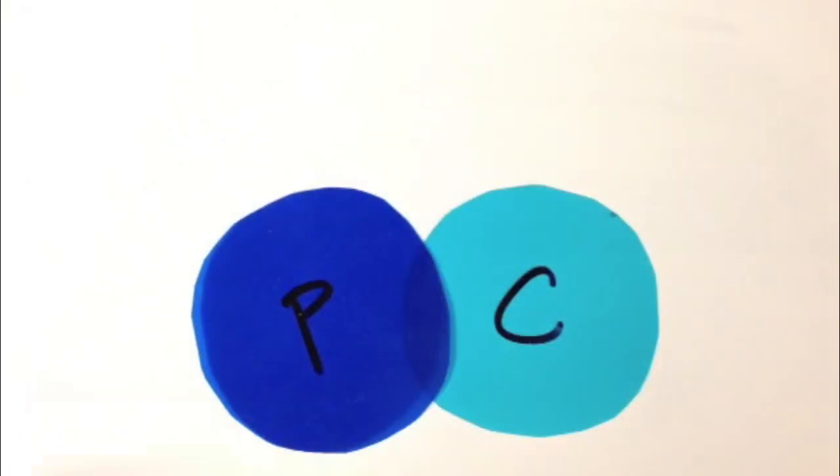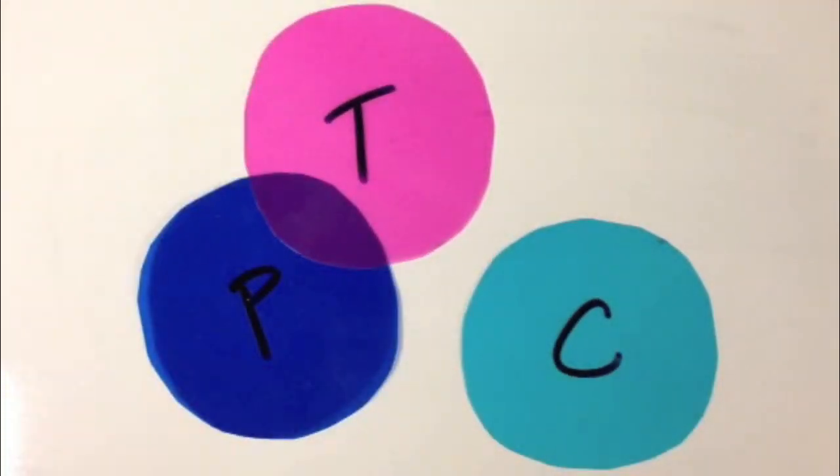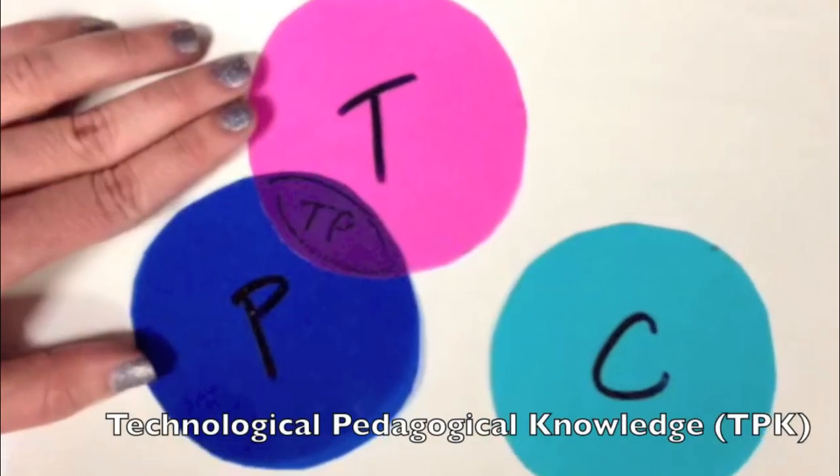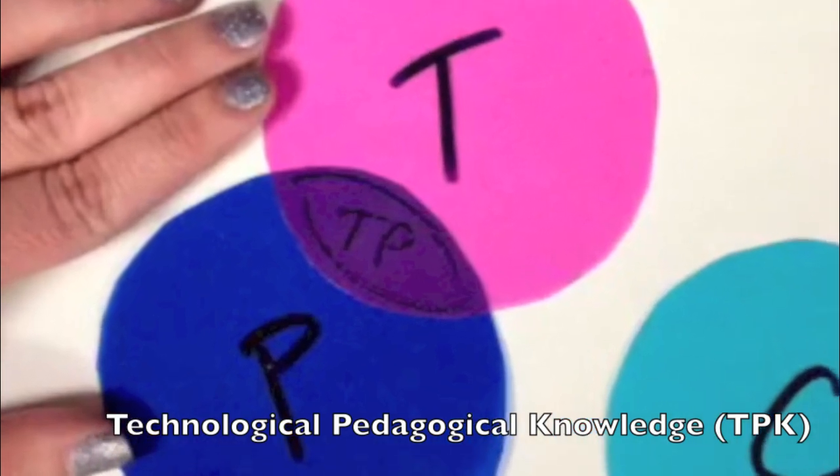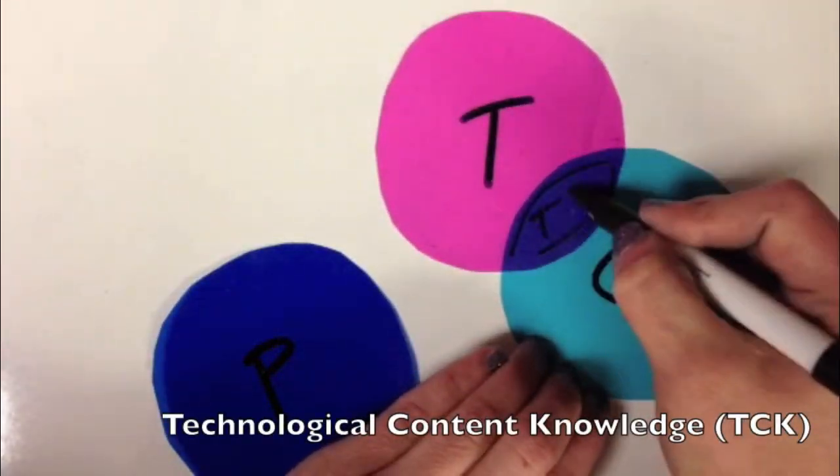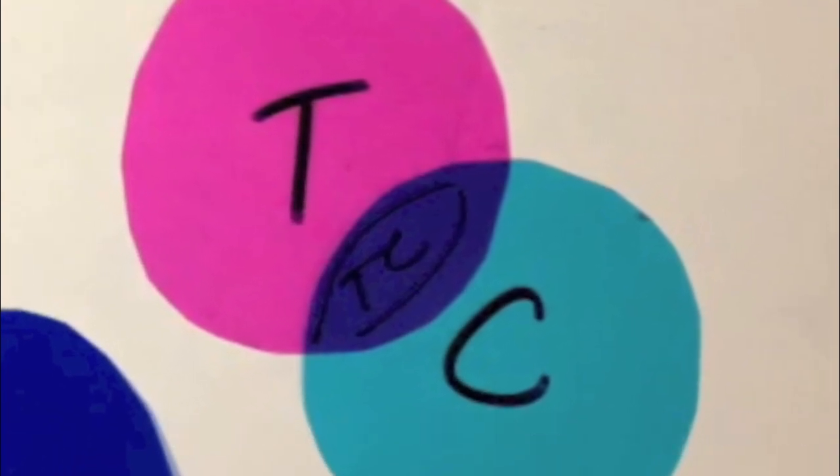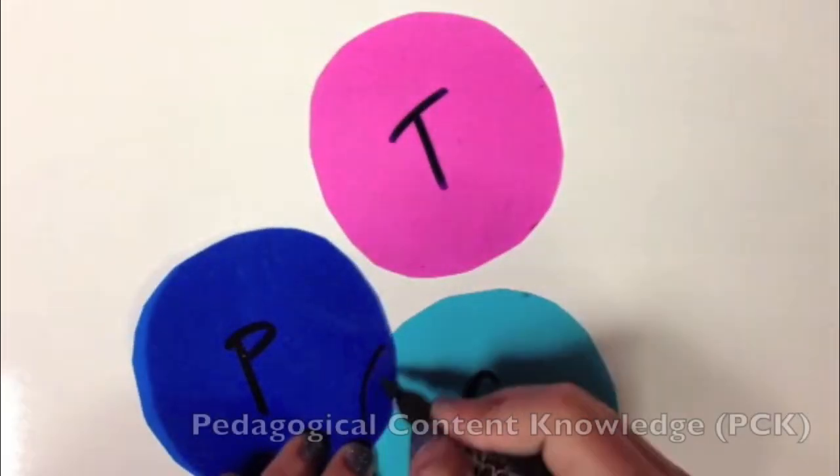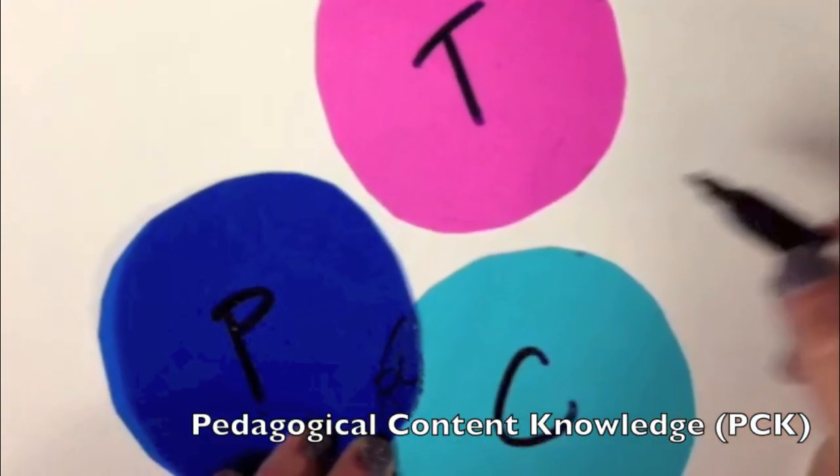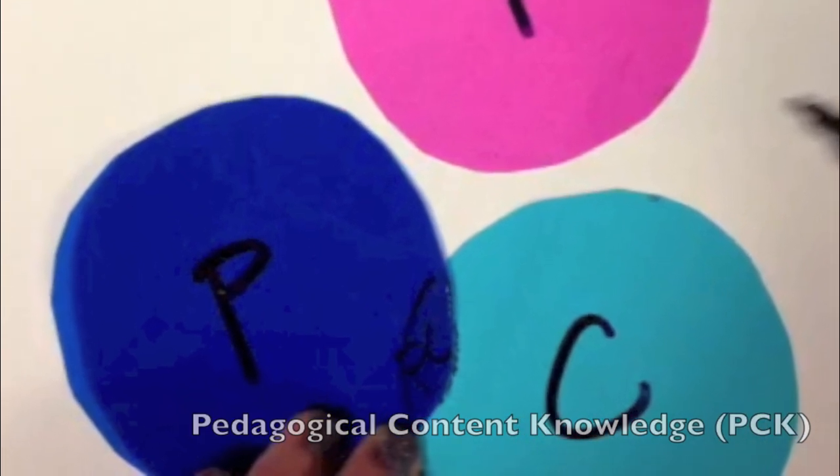As we understand them individually, we can start to see overlaps. Our TP knowledge allows us to understand how we're making the content more accessible. Our TC knowledge allows us to identify the affordances of pairing the appropriate technology to the content. And our PC knowledge allows us to identify the affordances of pairing the appropriate pedagogical strategies with the content.